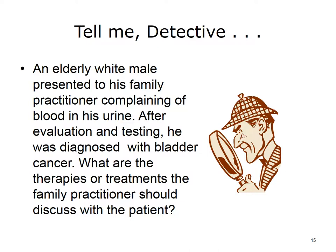The correct answers are surgery, radiation therapy, chemotherapy, and biological therapy. Bladder cancer occurs in the lining of the bladder and is the sixth most common type of cancer in the U.S. Risk factors for bladder cancer include smoking, exposure to chemicals in the workplace, a family history of bladder cancer, and being an older white male. Biological therapies use the body's immune system, either directly or indirectly, to fight cancer or to lessen the side effects that may be caused by some cancer treatments.